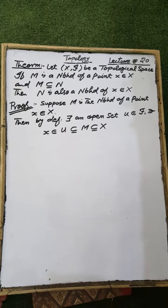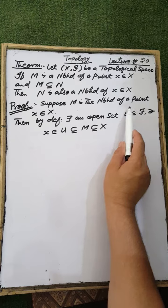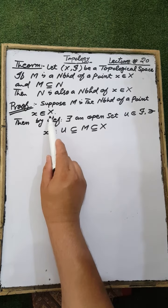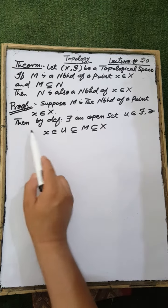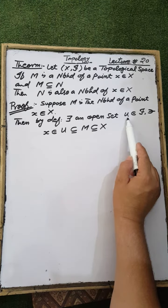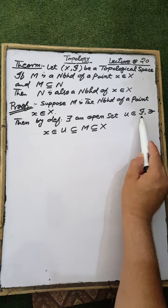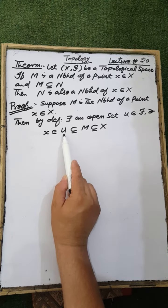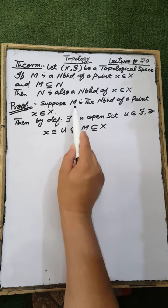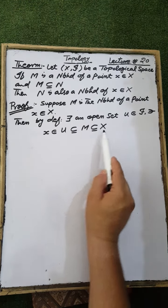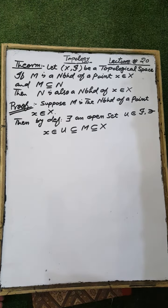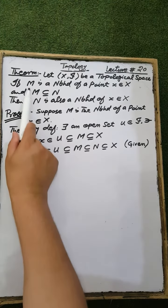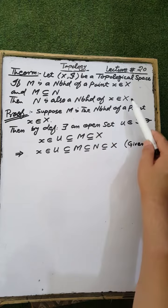Suppose M is the neighborhood of a point X belonging to the ground set X of a topological space X. Then by definition, there exists an open set U such that the element X is contained in the open set U, which is a subset of the set M, and the set M is a subset of the ground set X. Both M and N are subsets of the ground set X.